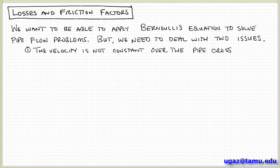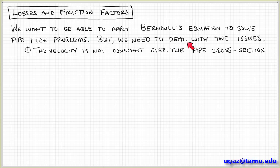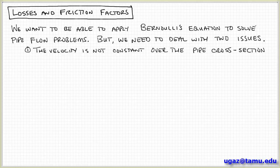Bernoulli's equation is valid more in the bulk flow away from bounding surfaces. But it's still a useful equation because it has a very simple form. So what we'd like to do is still take Bernoulli's equation and use it to solve pipe flow problems. But we can't do that directly because it's inherently not valid for those kinds of flows. So we can be a little clever and apply Bernoulli's equation to pipe flow by making some corrections so that it could be valid in this regime. There are two kinds of corrections we need to consider in order to apply Bernoulli's equation to pipe flow problems.